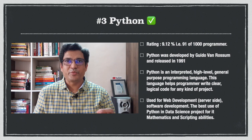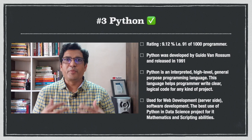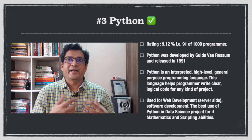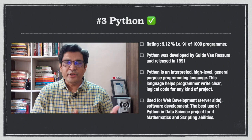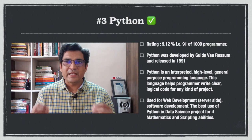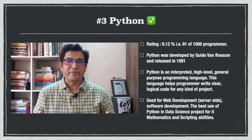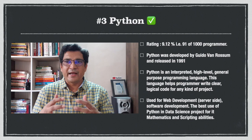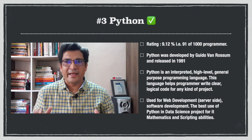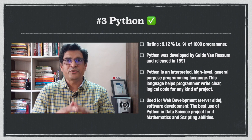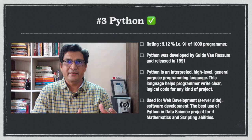At number 3 is Python, one of the most popular programming languages in the world today. Python is not a new language — it was developed by Guido van Rossum and released in 1991. Python is an interpreted, high-level, general-purpose programming language that helps programmers write clear, logical code for any kind of project. It is used for web development on the server side, and its best use is in data science projects for its mathematical and scripting abilities.